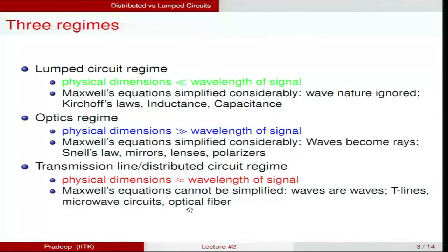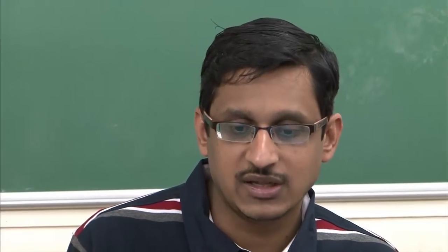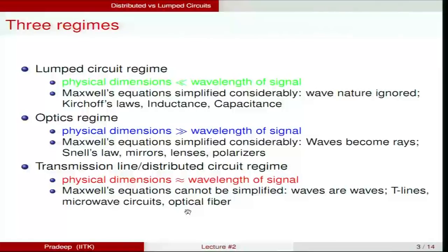It may be surprising to find optical fibers in the transmission line regime, but for a single-mode optical fiber the diameter is around 5 microns while the light wavelength is around 1.5 microns — this difference is not very large. Maxwell's equations cannot be ignored; they are used to predict the modes inside an optical fiber. That is precisely why we include optical fiber in the transmission line regime, even though it is not usually thought of as a transmission line.